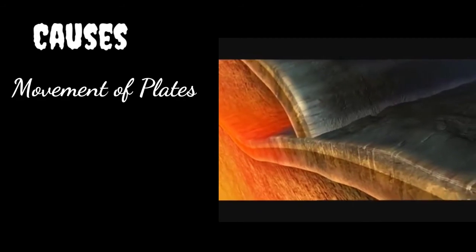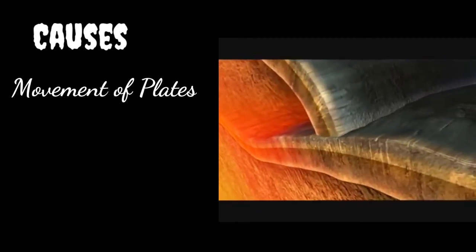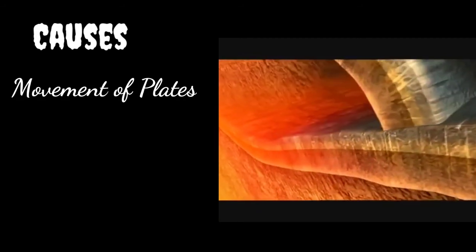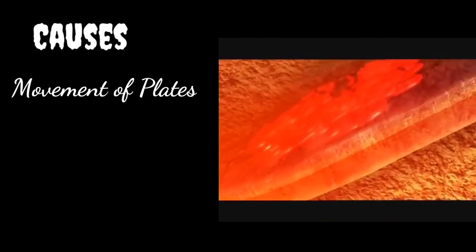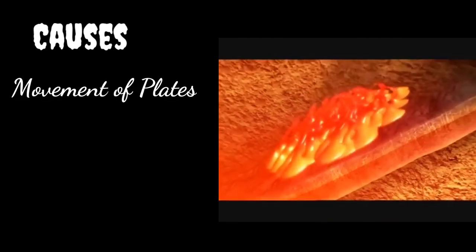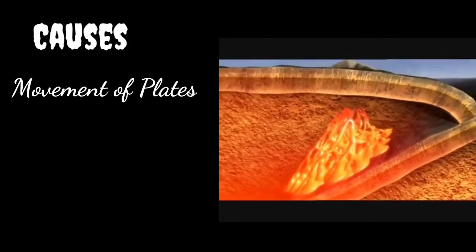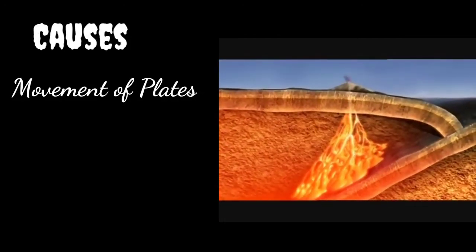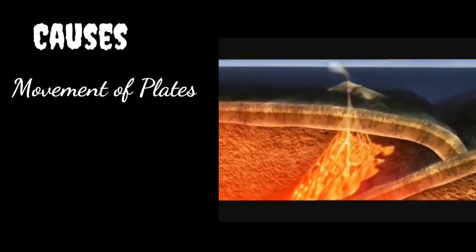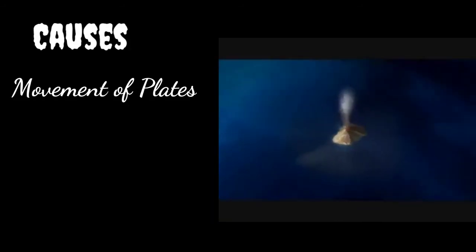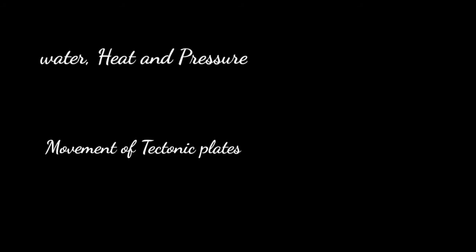At these margins, one tectonic plate may be moving away from another, or in some areas moving towards each other. This movement helps the magma escape to the surface. So the two main causes of volcanic eruption are: first, pressure, heat, and water; and second, the movement of tectonic plates. Now let us look at the different types of volcanoes.